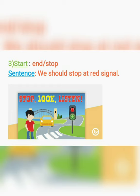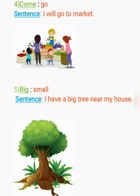Our next word is come, یعنی کی آنا. The opposite of this word is go, یعنی کی جانا. آنا اور جانا. Sentence: I will go to market. مَیں بازار جاؤں گا.